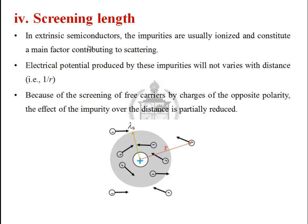Normally, the electric potential is inversely proportional to 1 over r. This is the normal Coulomb case. But in the case of extrinsic semiconductors, the electric potential will not vary simply as 1 over r — it is not purely inversely proportional to distance. This is mainly due to the screening effect.